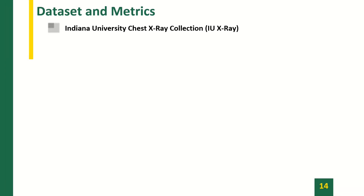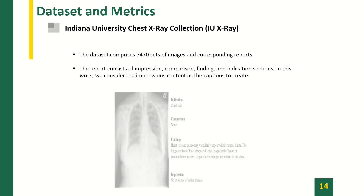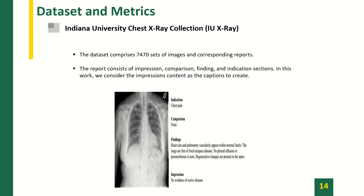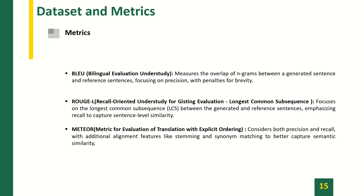In this work, we used the Indiana University Chest X-ray Collection as our dataset. The dataset comprises 7,470 sets of images and corresponding reports. The reports consist of impression, comparison, finding, and indication sections. We consider the impression contents as the caption to generate, because it is considered the most important section in the medical report, which is usually investigated by clinicians. To assess the quality of the generated captions, we used BLEU, ROUGE-L, and METEOR scores as metrics.